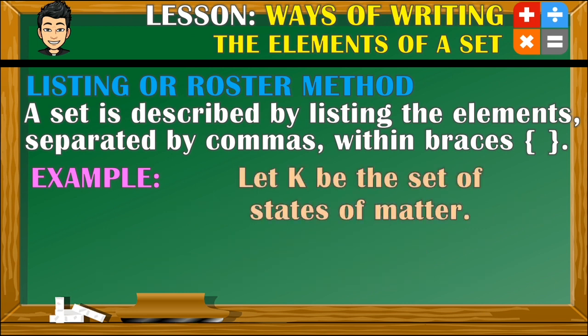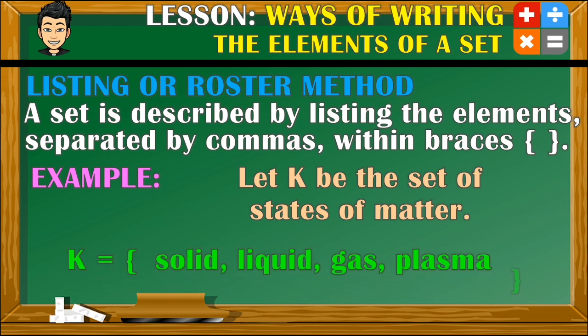For our next example, let K be the set of states of matter. Take note that in listing or roster method, if the elements of a set are words, we always use small letters. So in this case, the elements will be represented just like this.